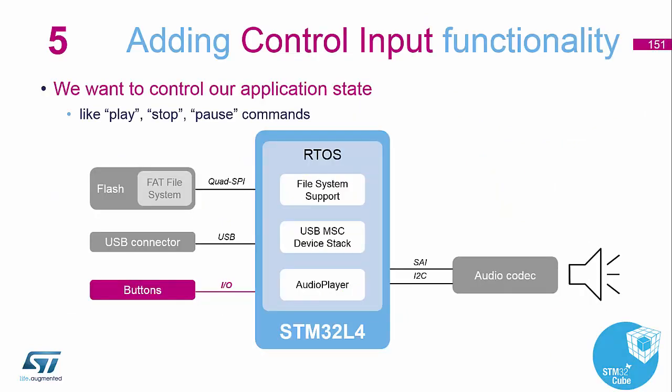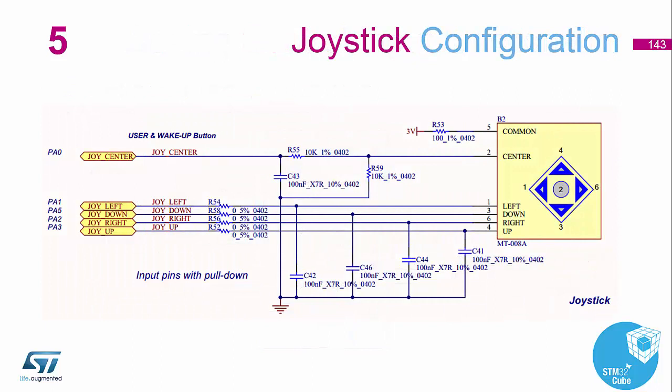This is done by just adding some GPIOs to our design, so there are no extra features to add elsewhere within the system. If we look at the schematic of the discovery board, our buttons are on PA0, 1, 2, 3, and 5 — they're all located within the same section of the circuit board.